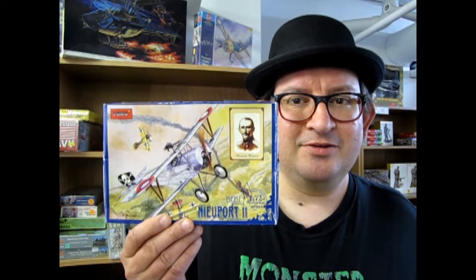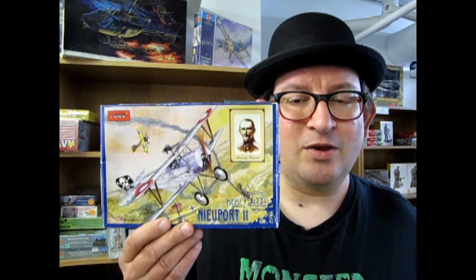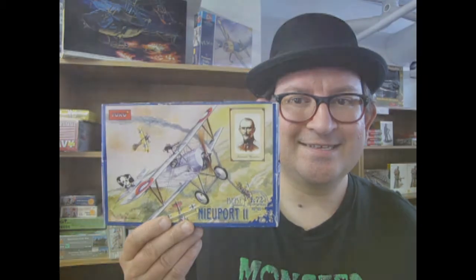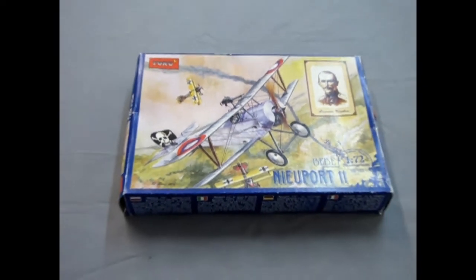Now let's go down to our table and take a look at what's in the box. And here we are back at our table where we're going to open the Toko Newport 11 Baby.